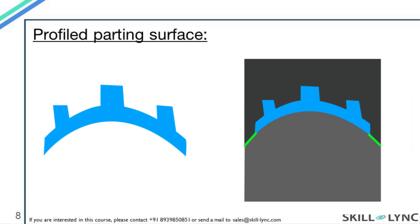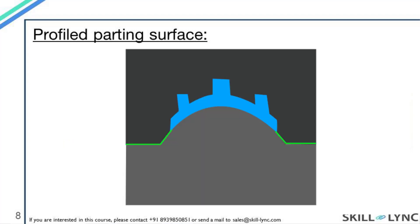Here we have a part that would require a profiled parting surface. You can see the base of the part has a curvature, and if we want the molded component to have a curved base, then you have to create a curved mold block for that. So whenever you have a curved profile like this case, we will have to create a curved or profiled parting surface. And as mentioned previously, we don't need to make the entire mold block with a curved profile. We will have the curved profile close to the component and after that we can have a straight parting surface for easier machining.